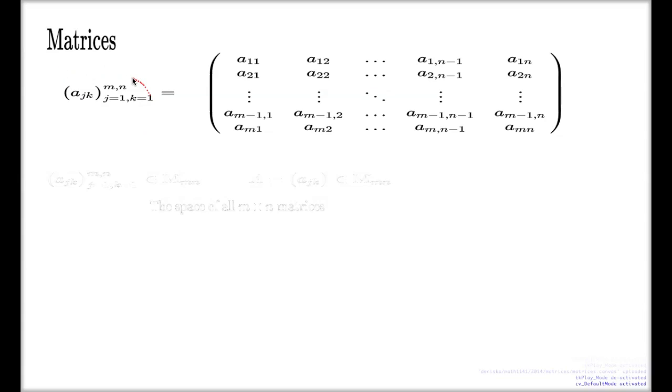This is just a notational side only. There's not any computational concepts here. The symbol capital M with the double index like this normally denotes the class of all matrices of size m times n, or the space of all m times n matrices.